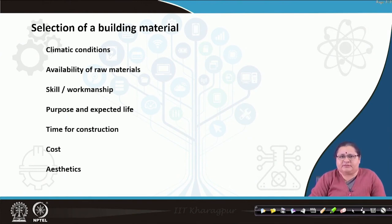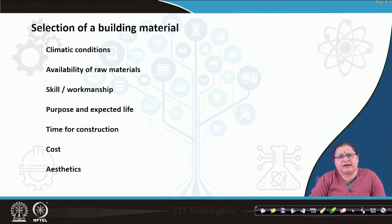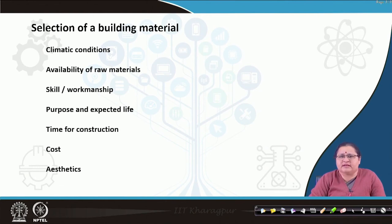Next is the availability of raw material. Availability of raw material reduces cost — if a material is locally available, it automatically brings down the cost. If you have a client who is going to spend a lot, then you can always play with that component. You can bring in Makrana marble and use it in the far east of our country. Depending on the pocket size of the client and the raw materials available, you can go for higher costing materials, but mostly the basic building material should be as per the available raw material, because the next point is skill and workmanship.